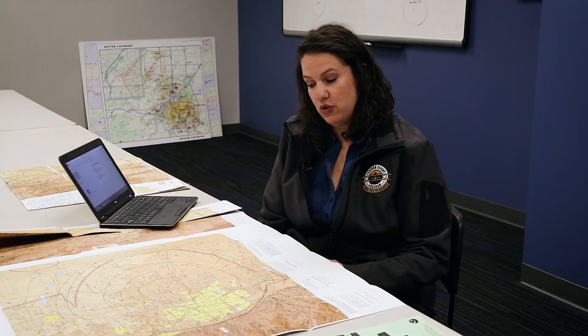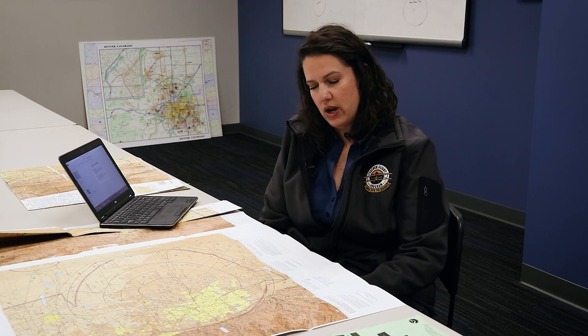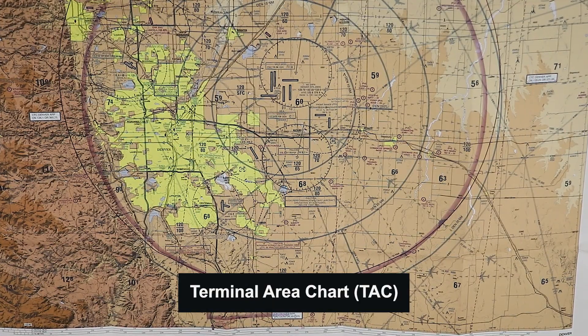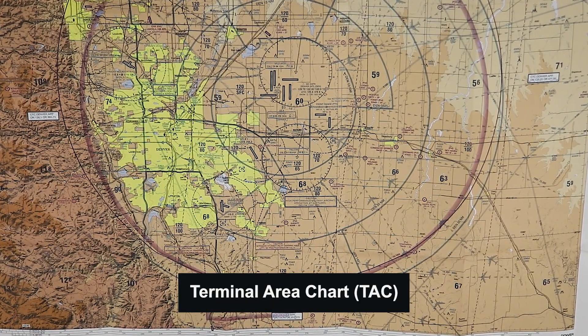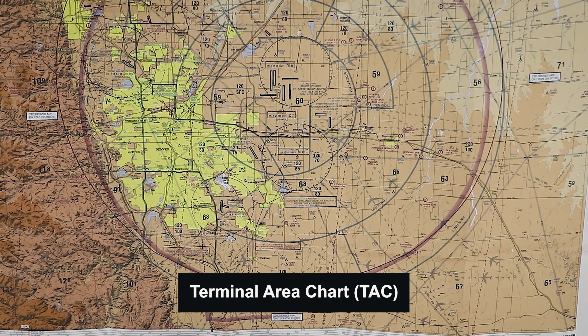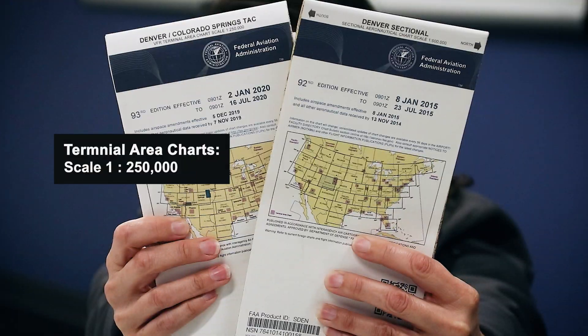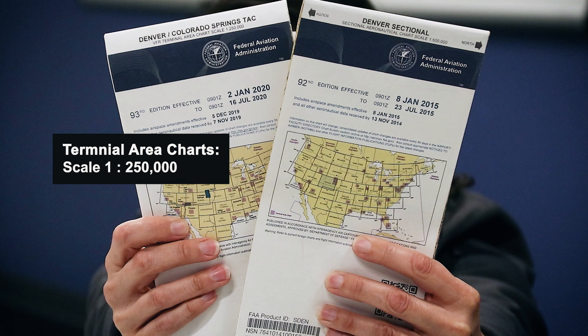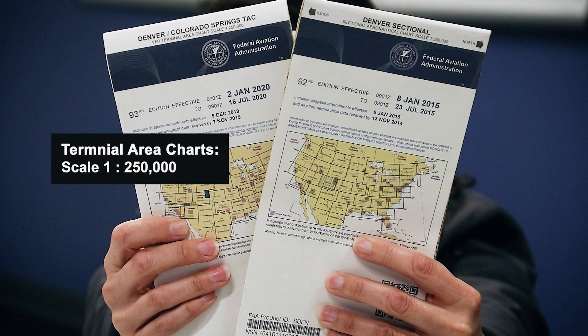I've been referring to both maps and charts. An aeronautical chart is what VFR pilots use for navigational purposes. This is what's called a terminal area chart, or TAC chart — the scale is 1 to 250,000. We also have sectional charts, which emphasize visual checkpoints and topographical information.